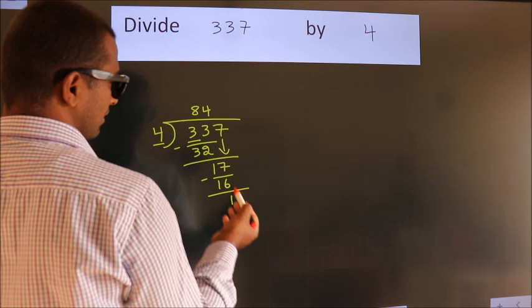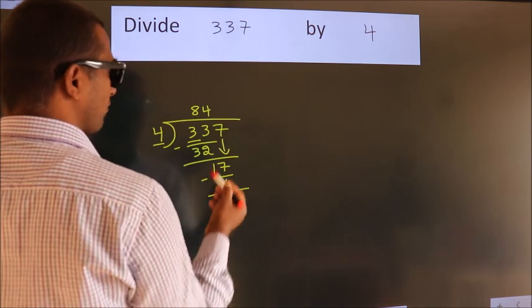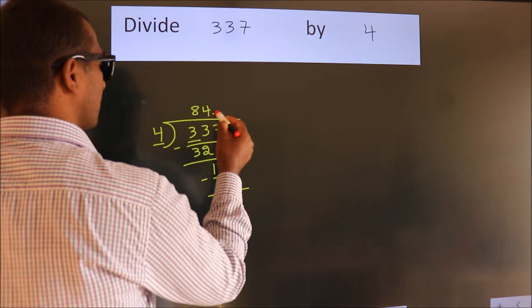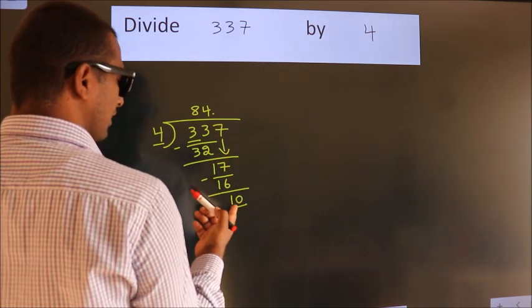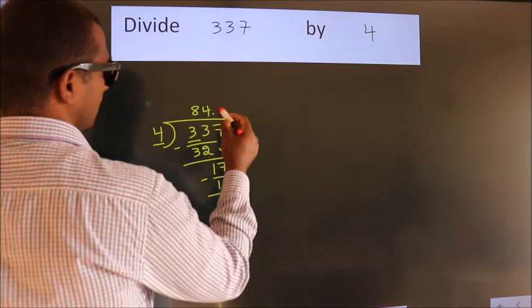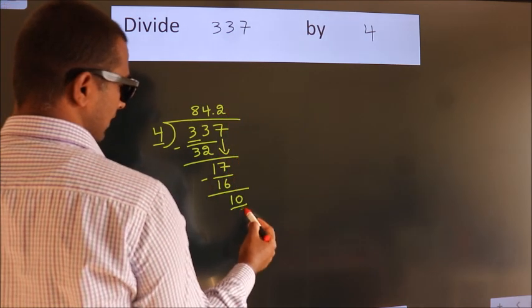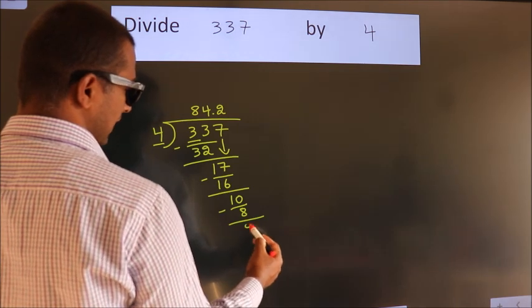After this, no more numbers to bring it down. So, what we do is, we put dot, take 0. So, 10. A number close to 10 in 4 table is 4, 2, 8. Now, we subtract. We get 2.